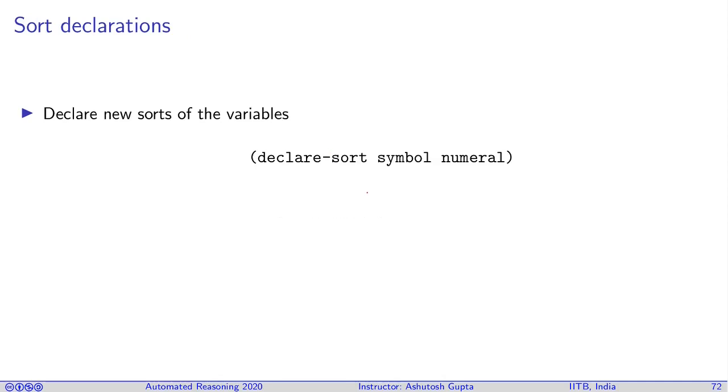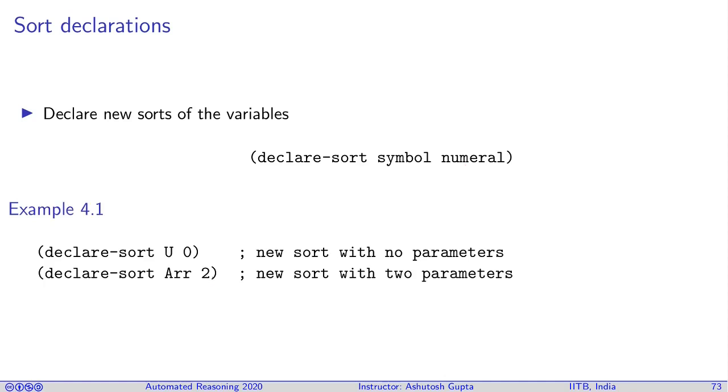Now, next comes the sort declaration. In a sort declaration you declare a new sort with some new name. How many other sorts it takes as parameters? Slightly unusual concept. Let's look at an example.